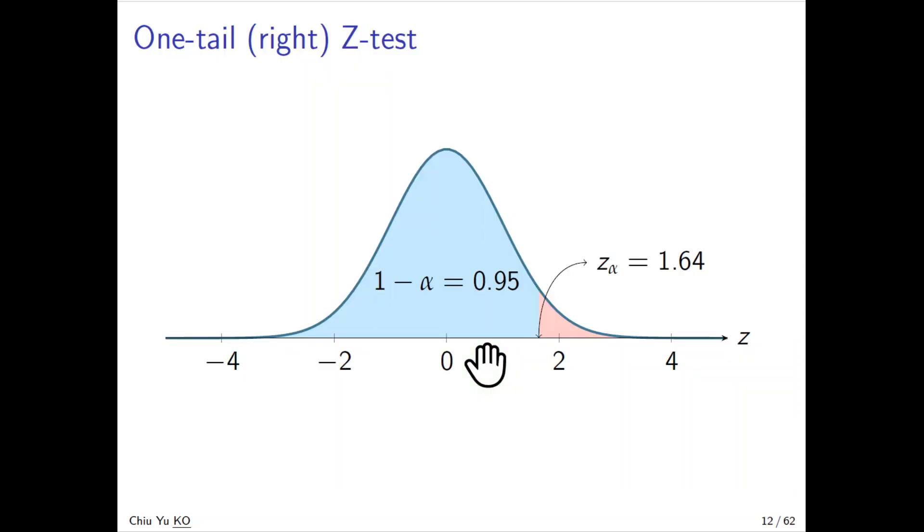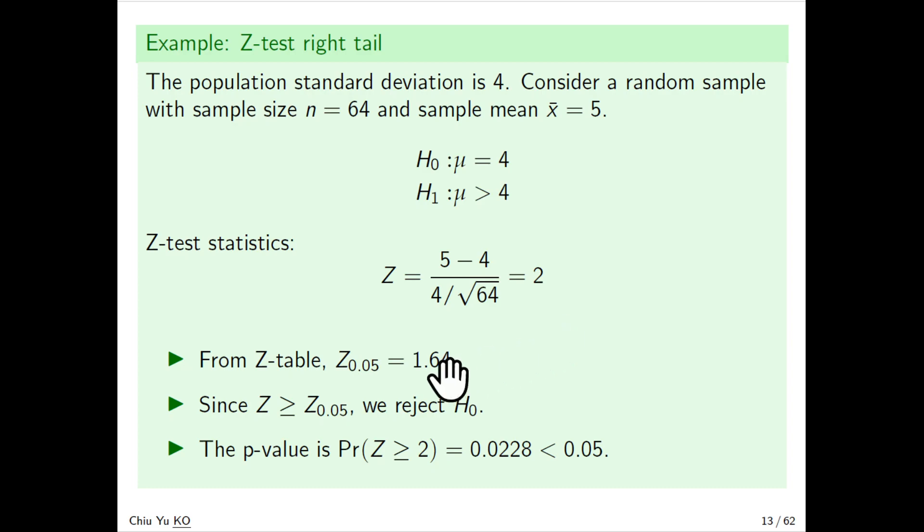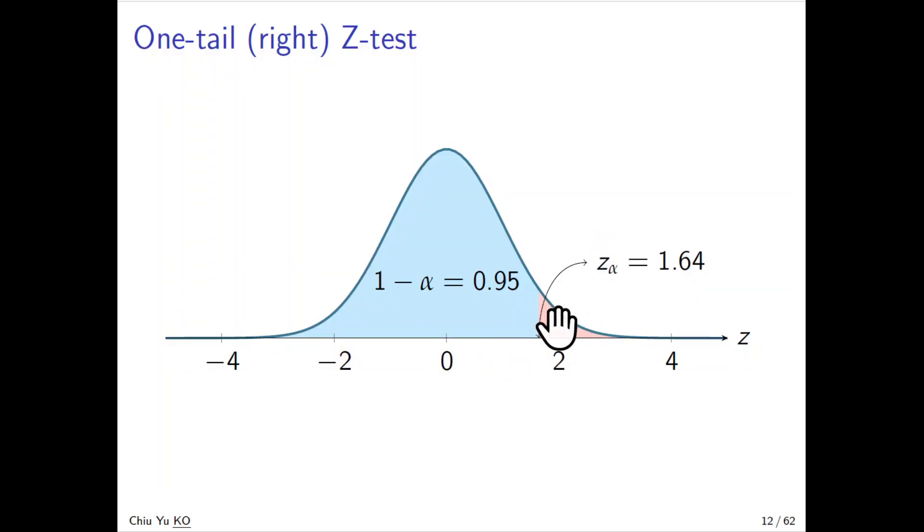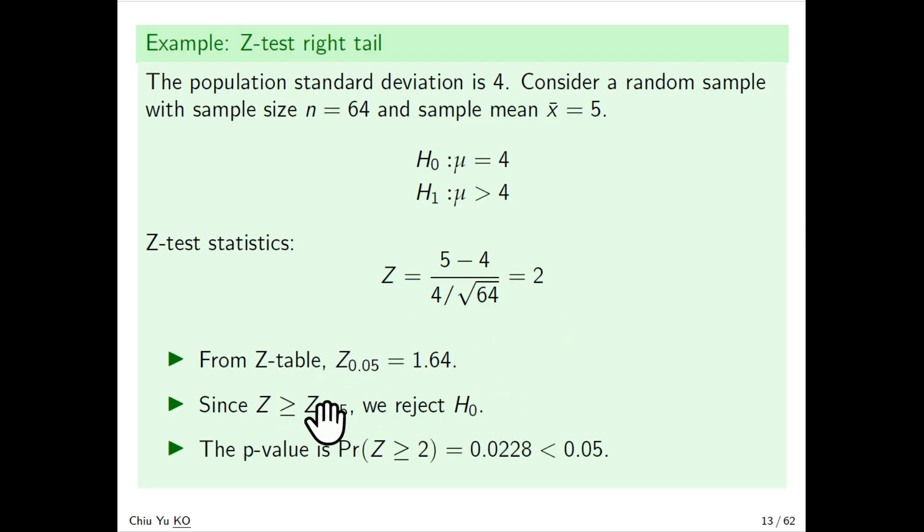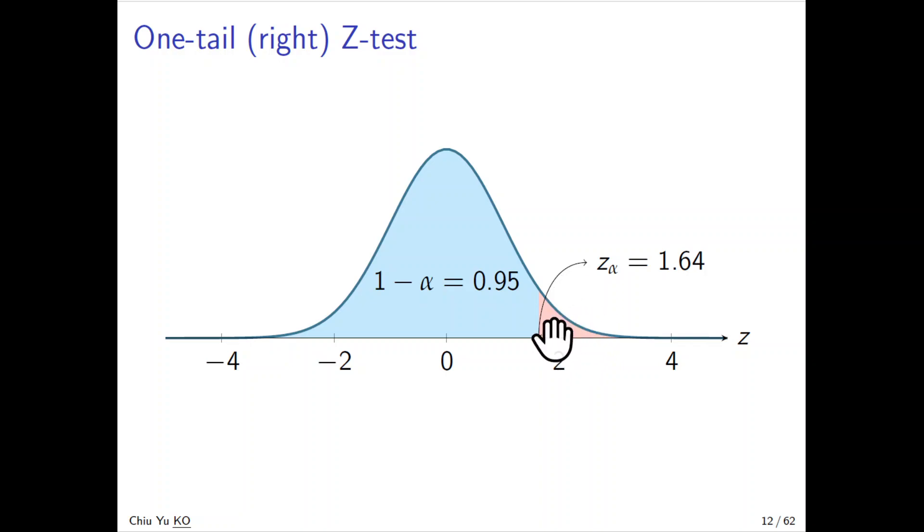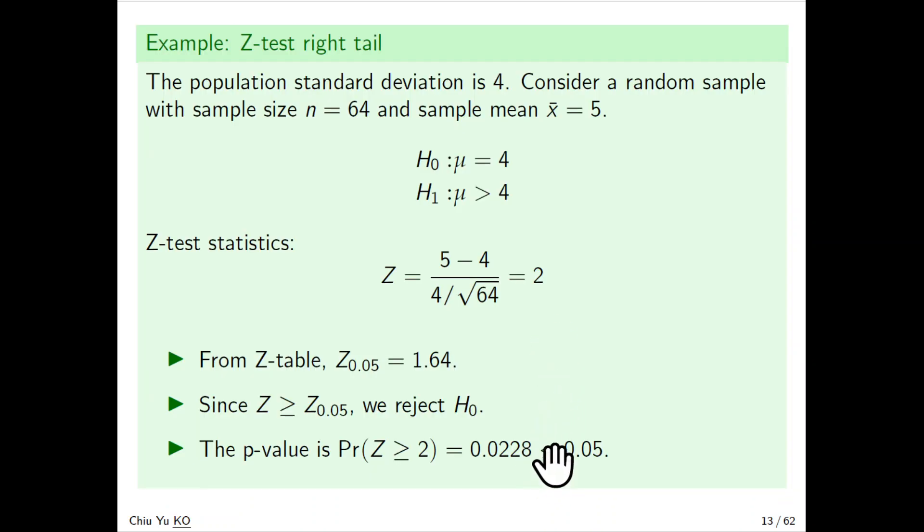We see z = 2 is greater than 1.64, so it's in the region of rejection, the red area. That means we reject the null hypothesis. Instead, we would hold the alternative hypothesis μ > 4. Alternatively, looking at the p-value, the area more than 2 is 0.00285, which is less than 0.05, so you would also reject based on the p-value.